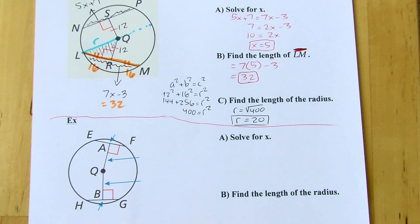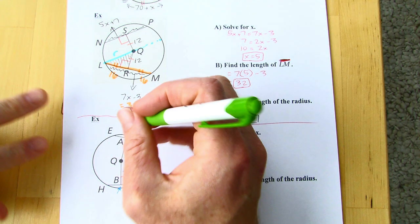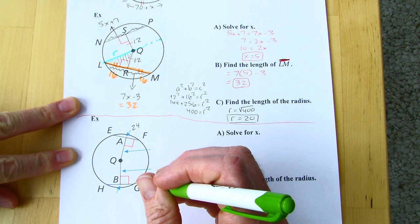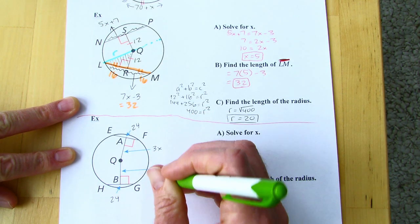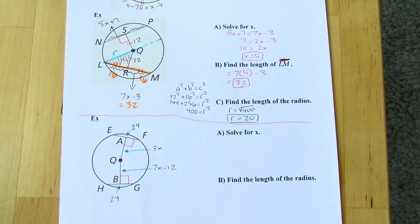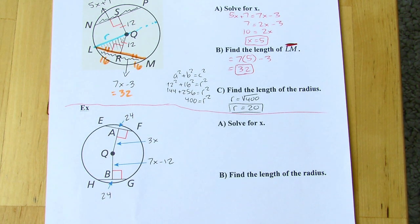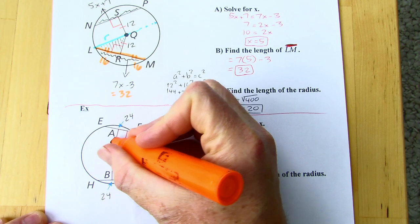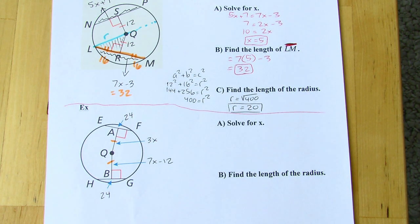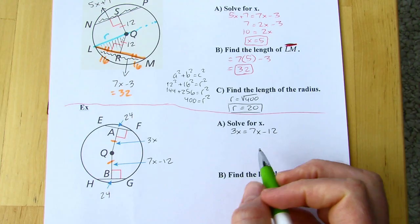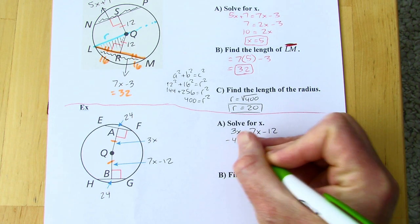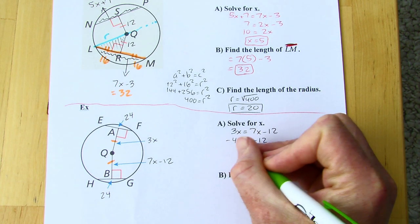Last problem — pause and try it if you want. Given info: both chords have length 24, and the perpendicular distances are 3x and 7x minus 12. Since the chords are congruent, they're equidistant from the center, so 3x = 7x − 12. Subtracting 7x from both sides and dividing by negative 4 gives x = 3.